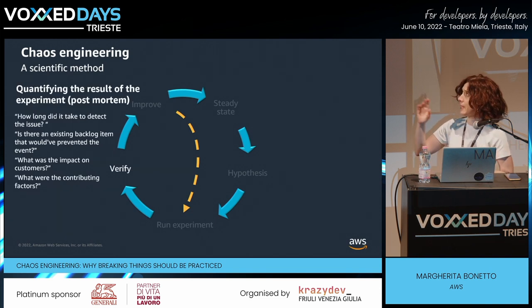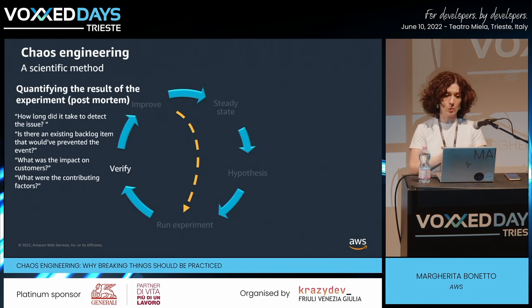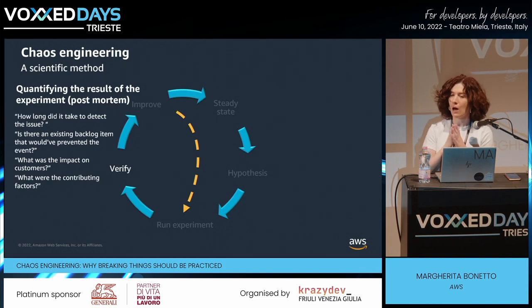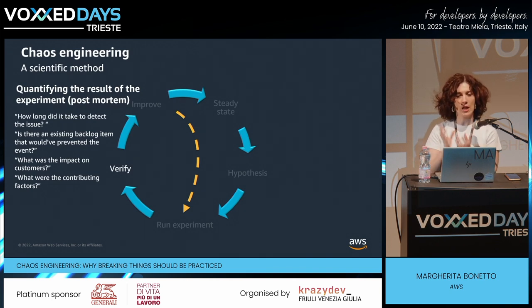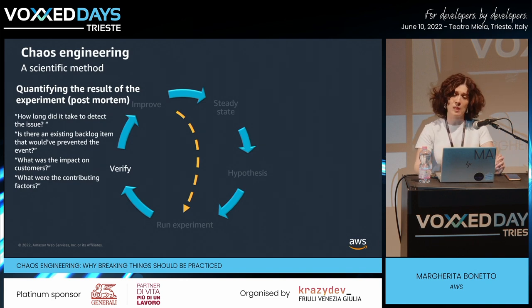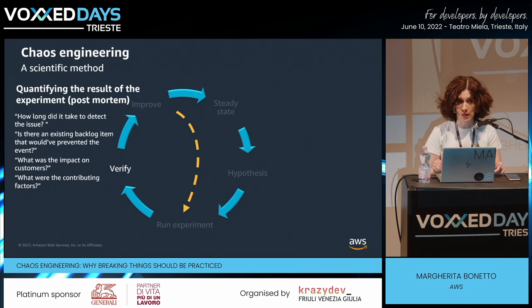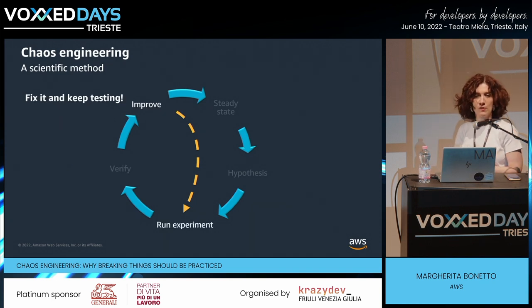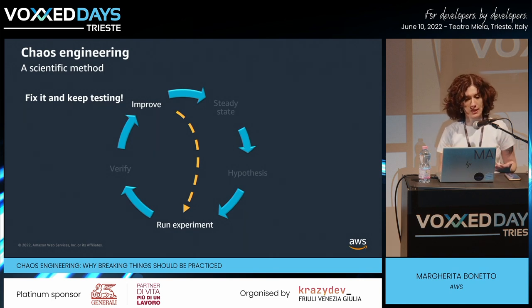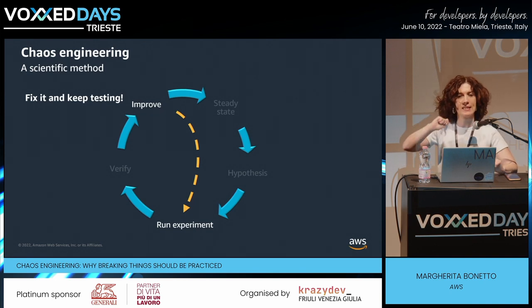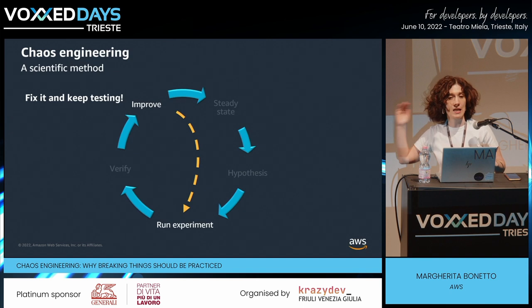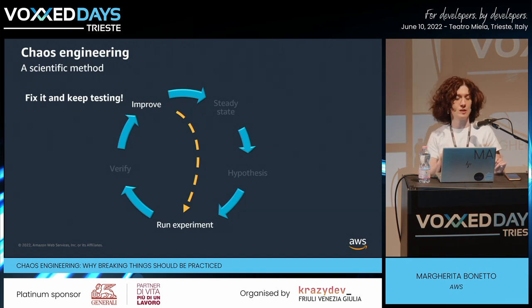So we run the experiment — then what? It's like a real production issue. Quantify the post-mortem. Discuss the mean time to restore: how long did it take? How long to get notified? Check if there was already a backlog item about this possibility. Understand the contributing factors and how it impacted your system. Then go and fix it, increase reliability, and keep testing. Test under different conditions, then start testing another part of your system. It's a cycle — a reiteration.